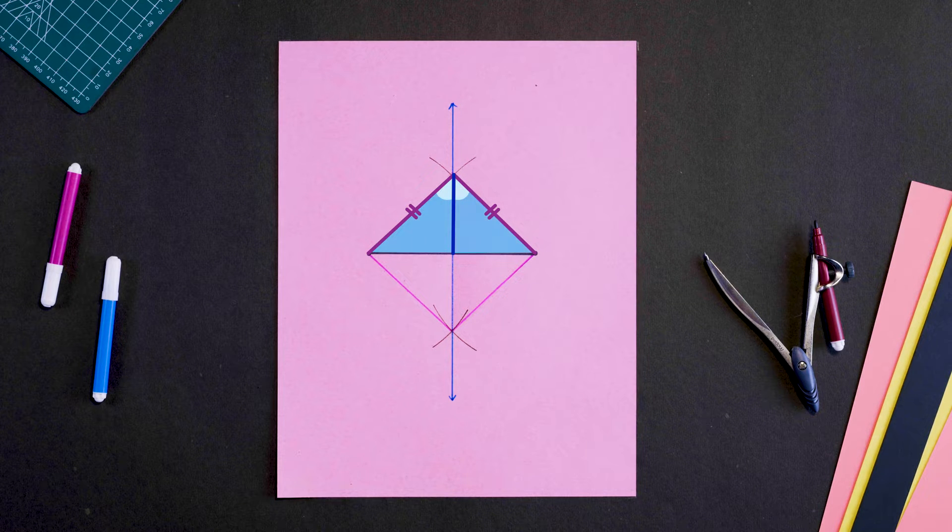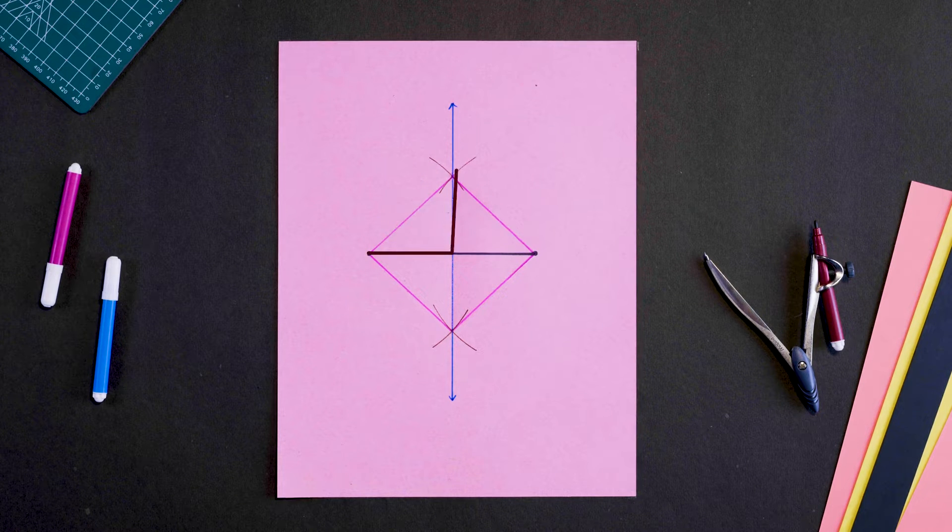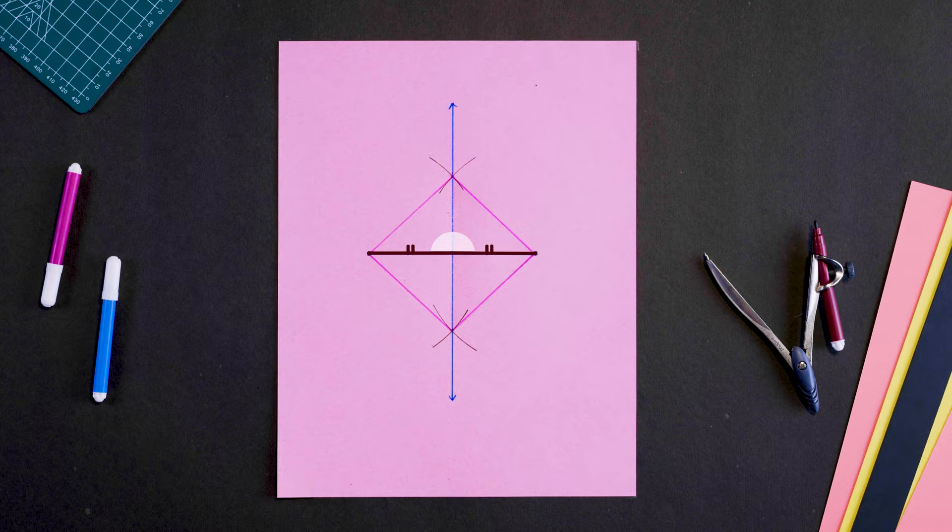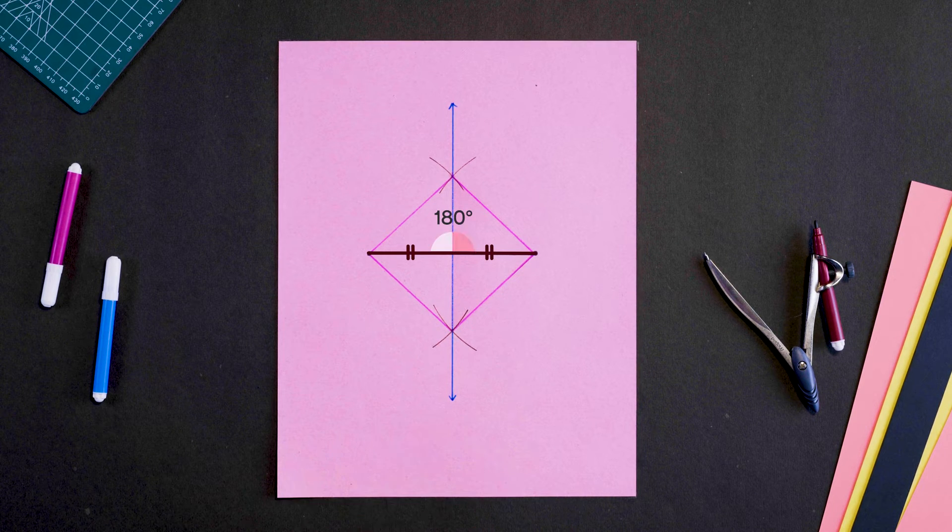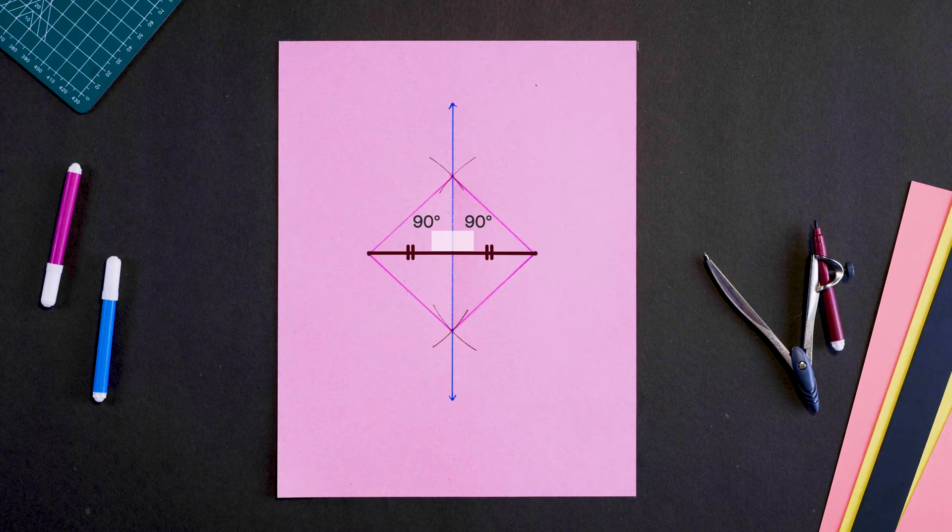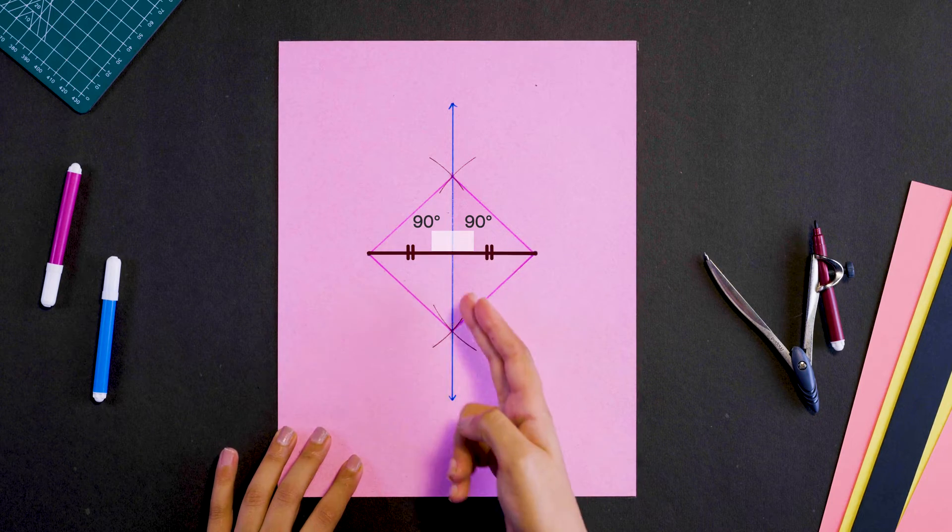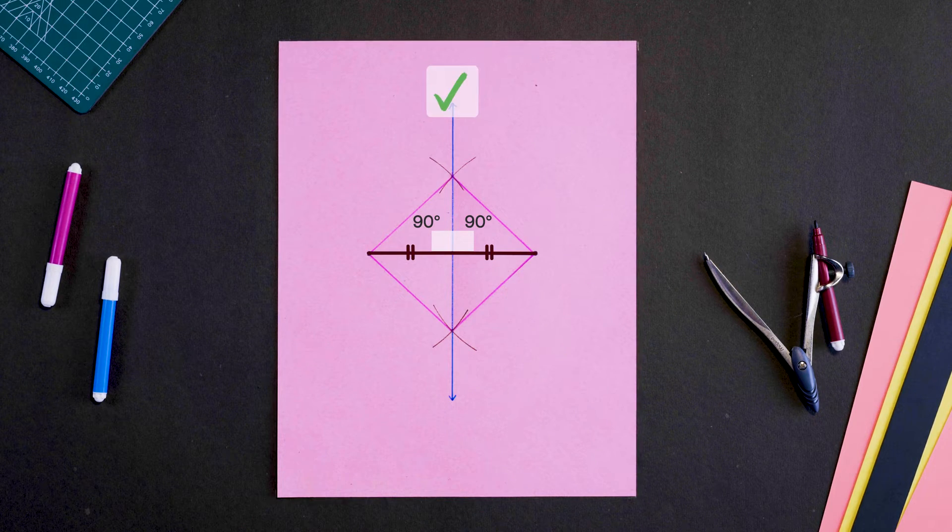So these two triangles must be congruent, which means these two lengths and these two angles are equal. Since the equal angles sum to 180 degrees, each must measure 90 degrees. So we get perpendicular bisector and we are done.